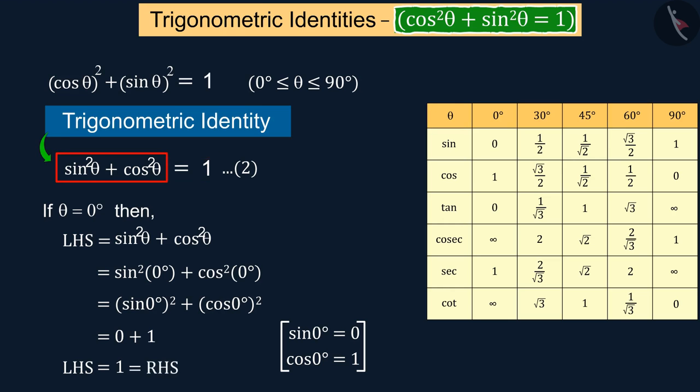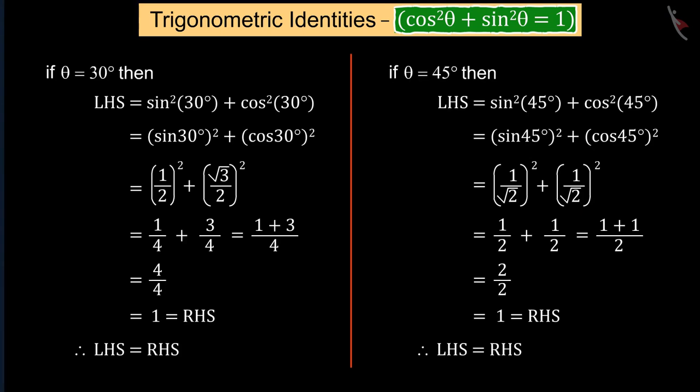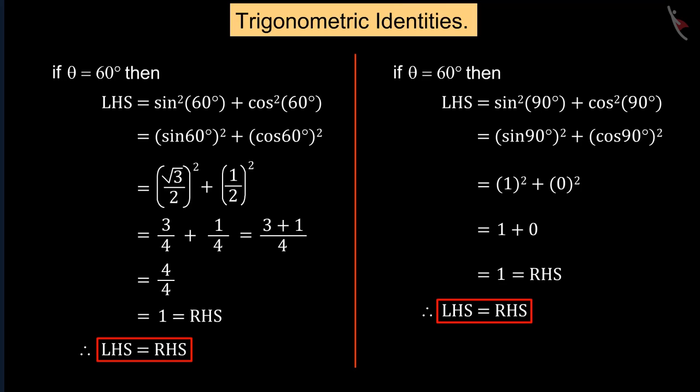Similarly, if solving any value for theta on the left side of Trigonometric Identity, then we get a value of all these, which are equal to the right side of the Trigonometric Identity.